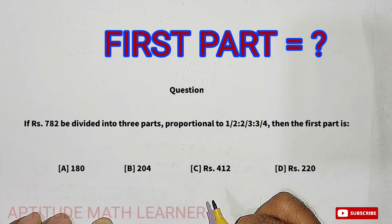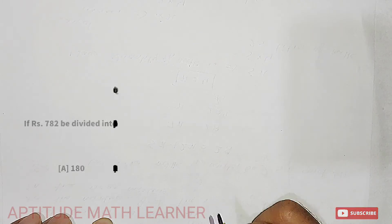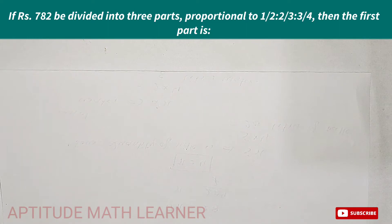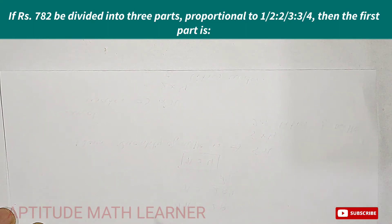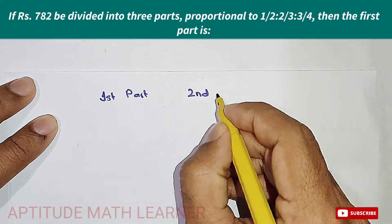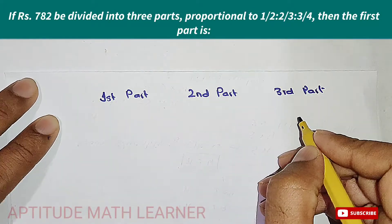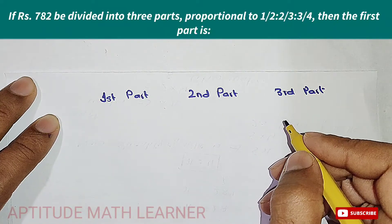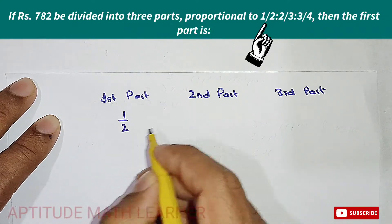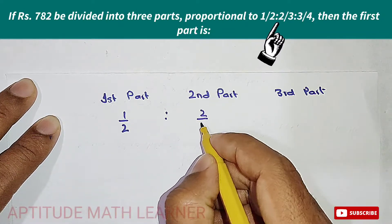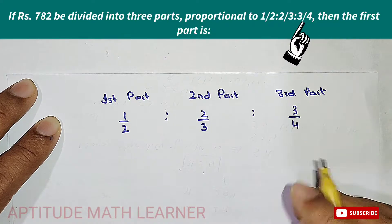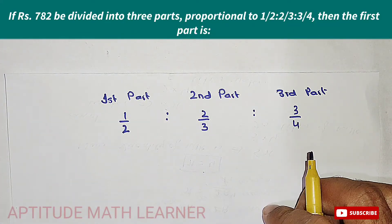We need to find the first part. For this, we divide the question into three parts — first, second, and third. The ratios we are given are in fractional form: the first part is 1/2, the second is 2/3, and the third is 3/4.